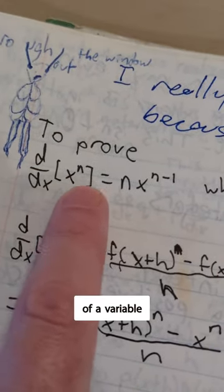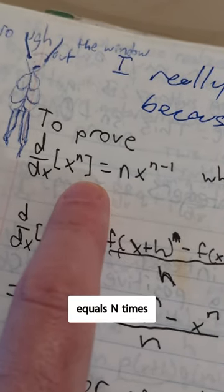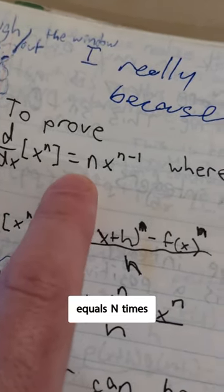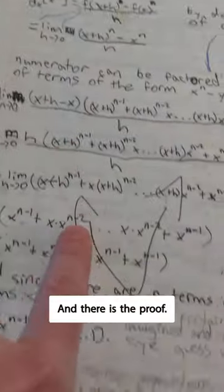This first proof is proving the derivative of a variable to the power n equals n times the variable raised to the power of n minus 1. And there is the proof, and so obviously you can see these poetry word circles, everything going around it is intense what's going on in here.